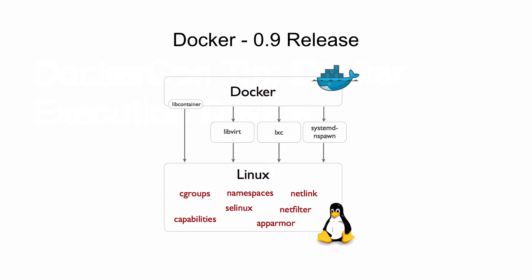With Docker 0.9 release, Docker introduced execution driver APIs and libcontainer. With execution driver APIs, Docker can now use different isolation technologies like libvirt, systemd-nspawn, and storage zones to create containers.